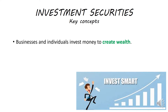We're going to look at different types of investments. You will see we're doing two chapters on investments. Chapter 6 is on investment securities, and the second one is on insurance. So obviously, businesses and individuals invest money to create wealth. The whole idea, when people invest their money, is that they want to see a return on their investment. They're investing their money because they want their money to grow.